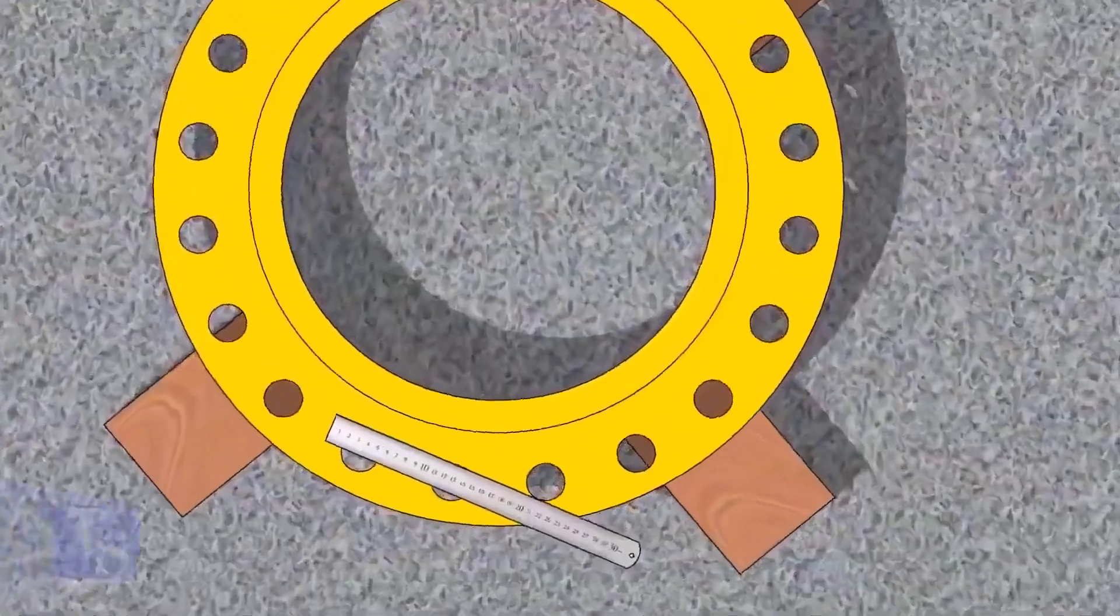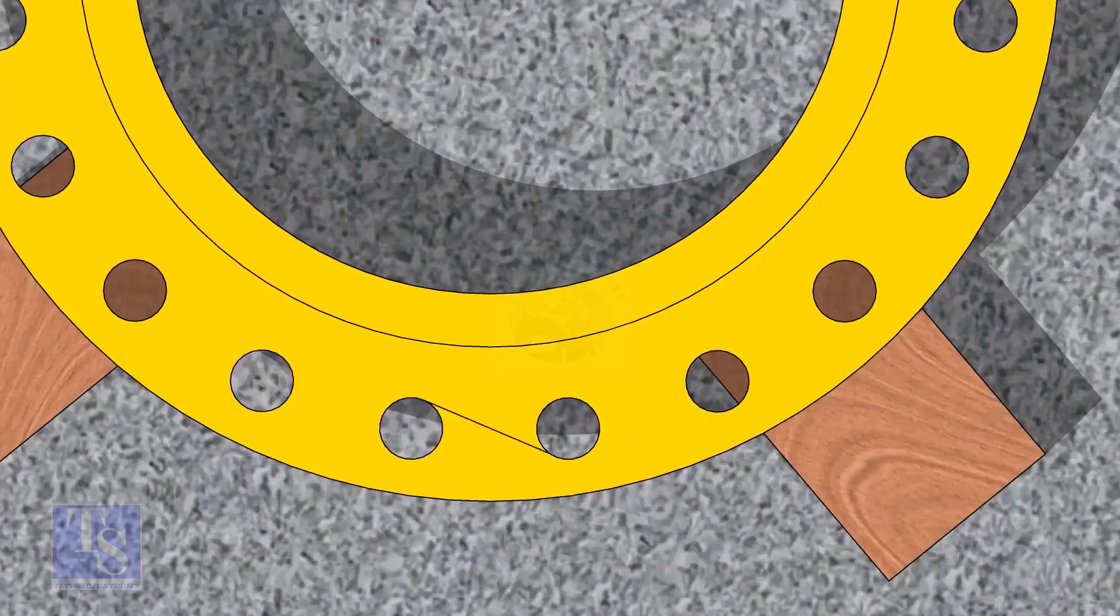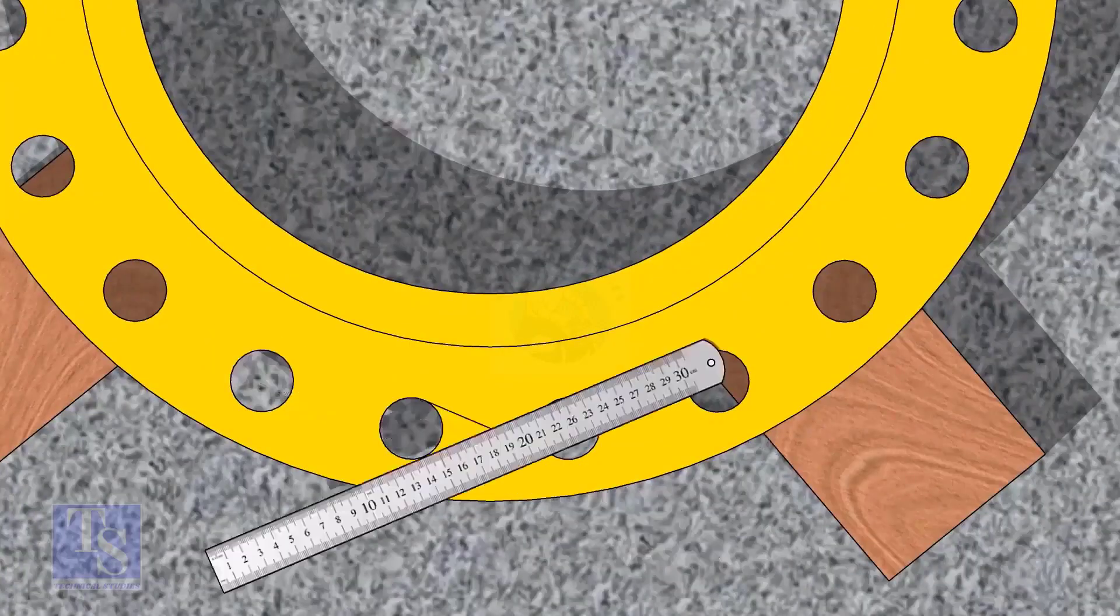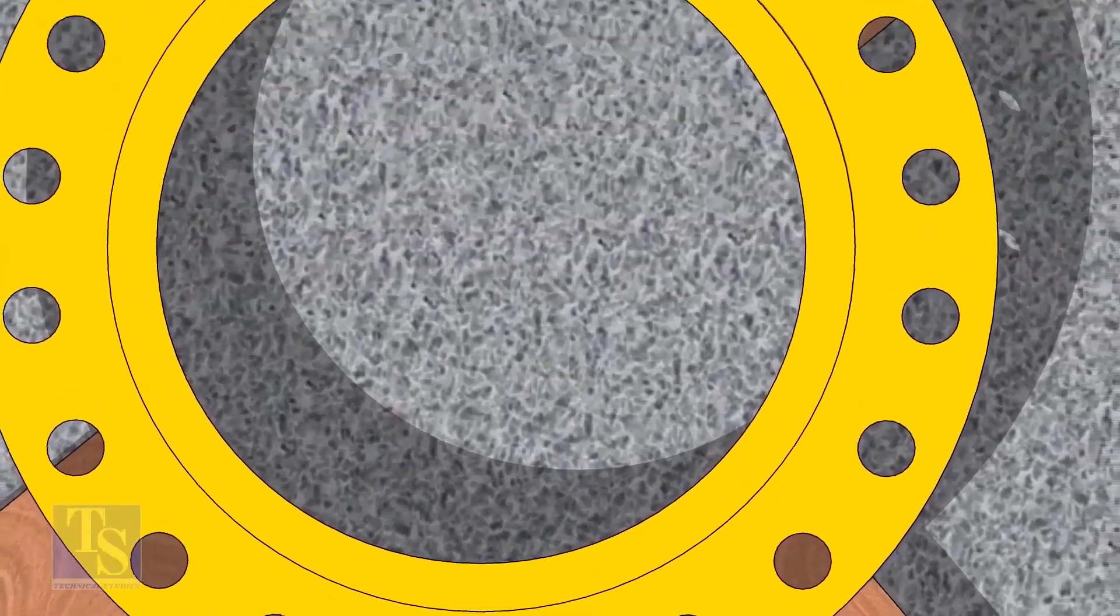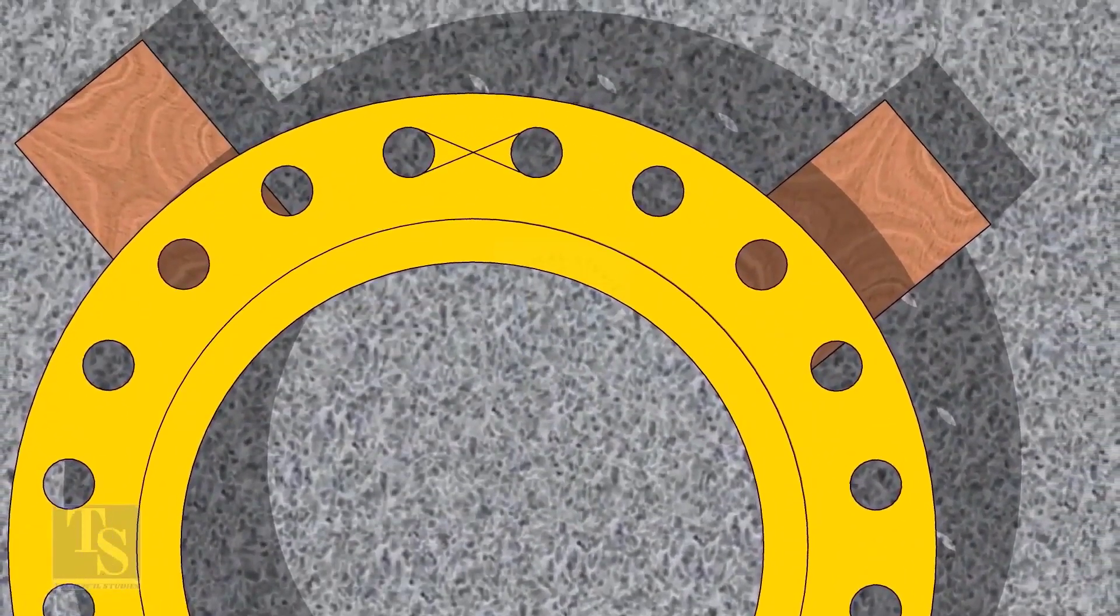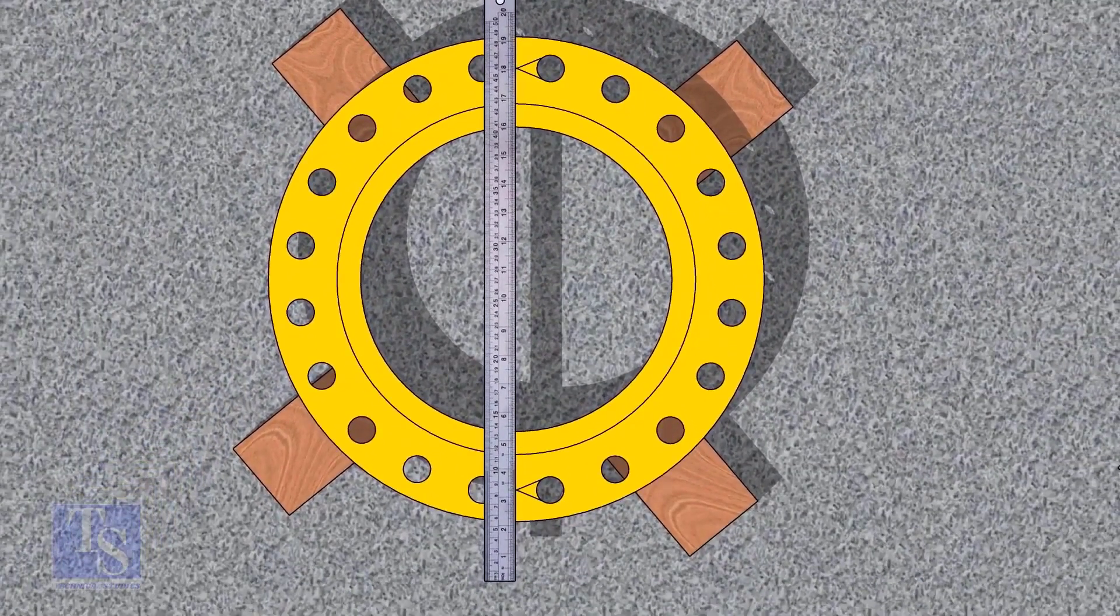Let us mark the center line of the flange. Draw tangential lines of two adjacent holes. The intersection of the lines is the center of these holes. Draw the center of the two holes on the opposite side. Draw the center line of the flange as shown.